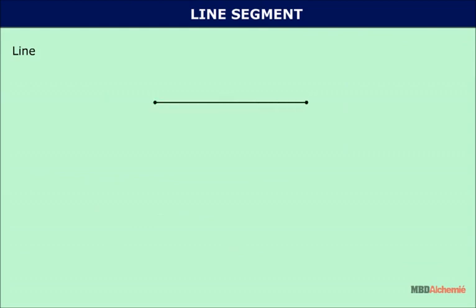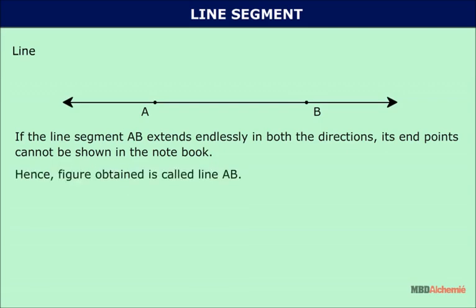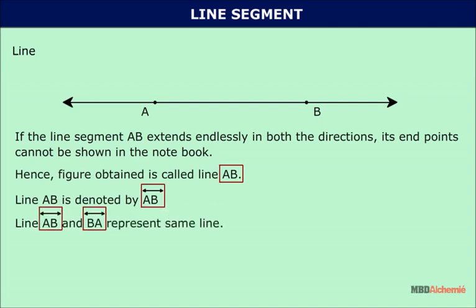Consider a line segment AB. Extend this line segment from A to B, and similarly extend the line segment from B to A. If the line segment AB extends endlessly in both directions, its endpoints cannot be shown in the notebook, so we draw arrows on both sides. The figure obtained is called line AB. Line AB is denoted by placing a double-headed arrow over AB. Line AB and line BA represent the same line.